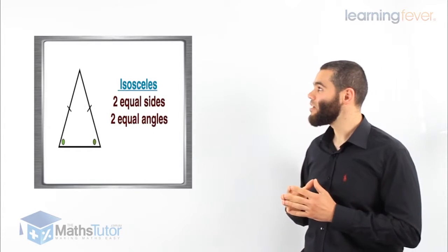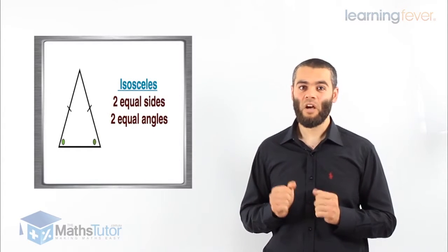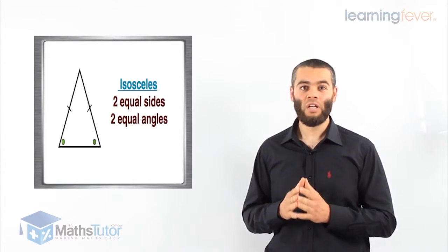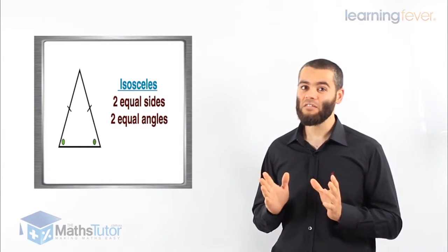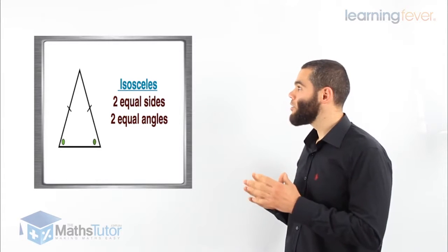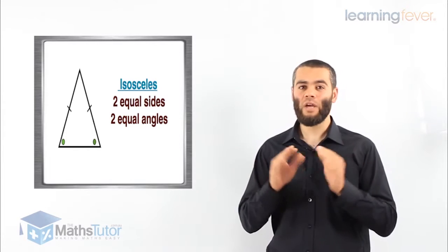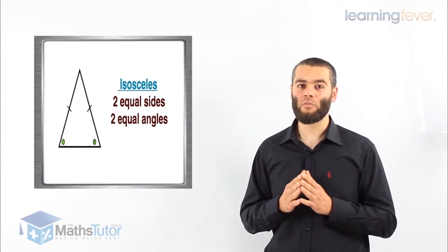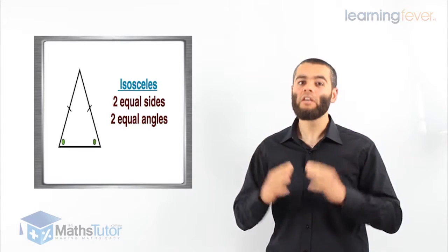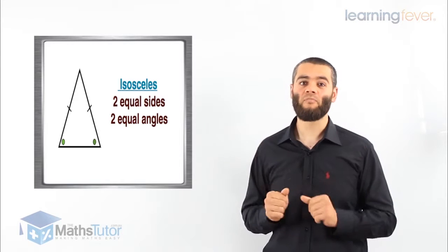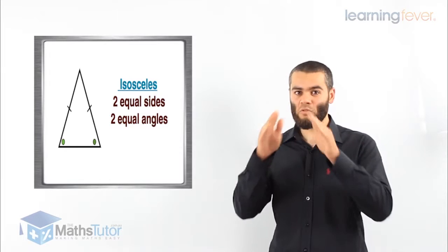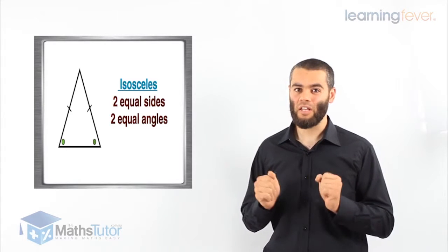Then we have the isosceles triangle. It has two equal sides and two equal base angles, meaning the two angles on the base are going to be equal. They are adjacent to the two equal sides. So whenever you think of an isosceles triangle, you know straight away the two angles that are adjacent to the equal sides are also equal.